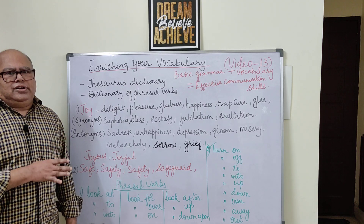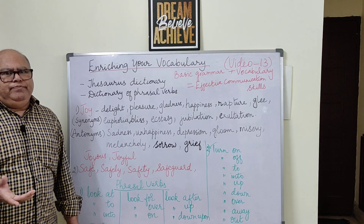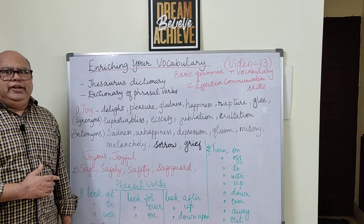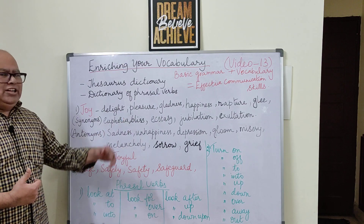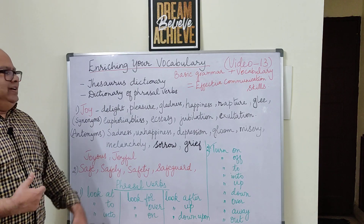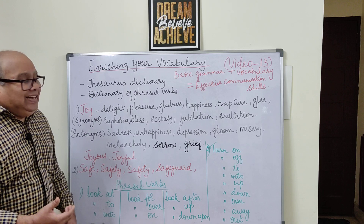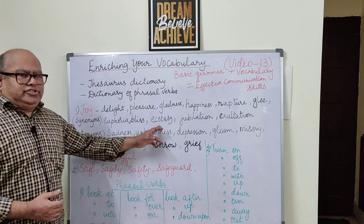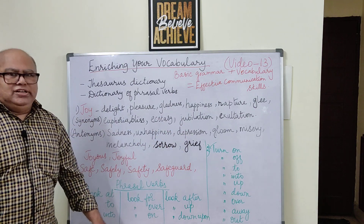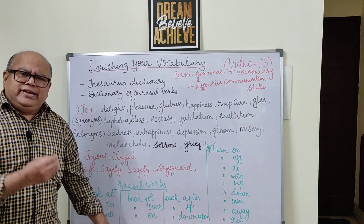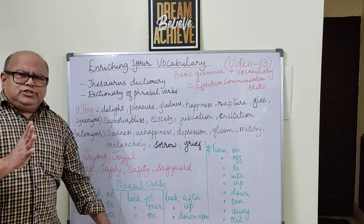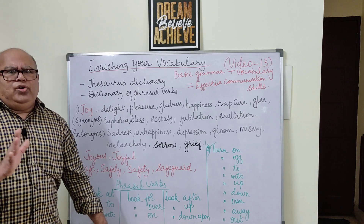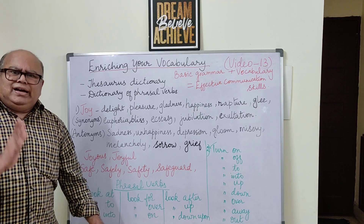Everything cannot be discussed in class — there are thousands of words in the dictionary. Just take one word: 'joy.' Look at the other words having a similar meaning: delight, pleasure, gladness, happiness, rapture, glee, euphoria, bliss, ecstasy, jubilation, exaltation. This is possible only if you are given to reading. If you have not developed the habit of reading, please start at the earliest.